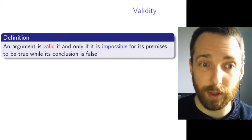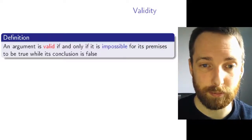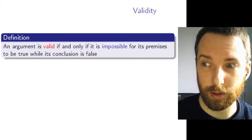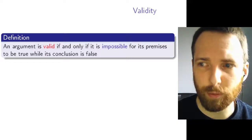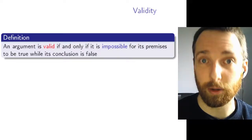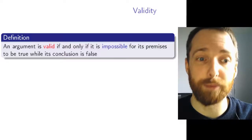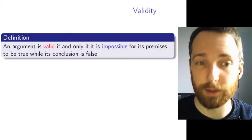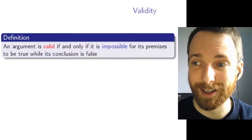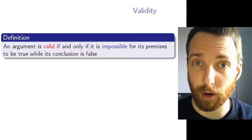Here is your official definition of validity. An argument is valid if and only if it's impossible for its premises to be true while its conclusion is false. Throughout the slides in this lecture I'm using colors to highlight important kinds of things — red and blue in particular. If you have red-blue color blindness, please let me know and I'll amend things. So the two things I'm highlighting here are validity and this kind of impossibility. What makes an argument valid is that it's impossible for the premises to be true and the conclusion false. Everything else I'm going to say in this lecture is trying to cash out exactly what this definition means and what its consequences are.